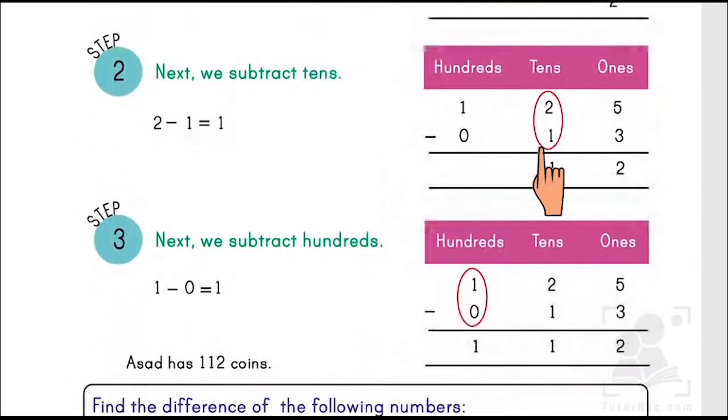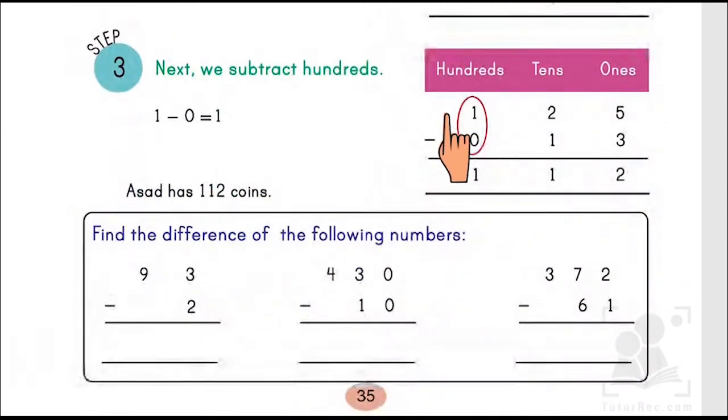Step 1: subtracting the ones. 5 minus 3 equals 2. Step 2: subtracting the tens. 2 minus 1 equals 1. Step 3: hundreds. 1 minus 0 equals 1. So 125 minus 13 equals 112. It means Asad has 112 coins.